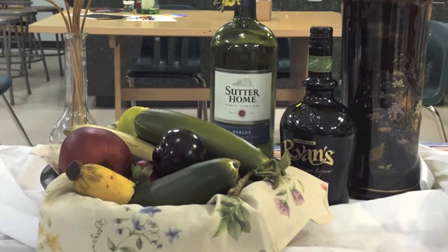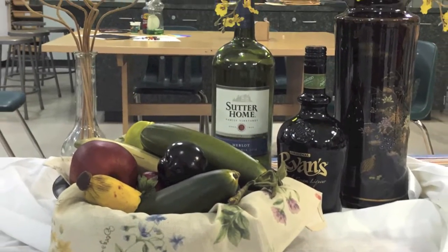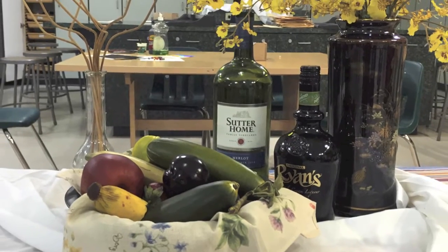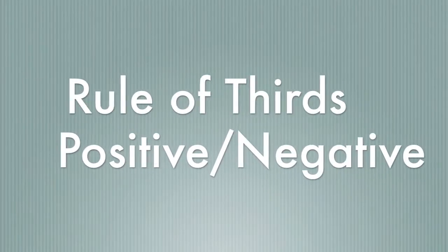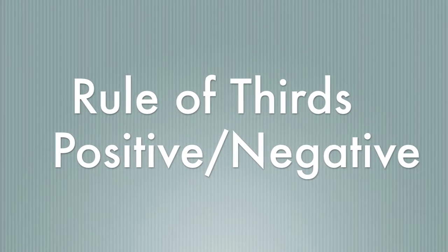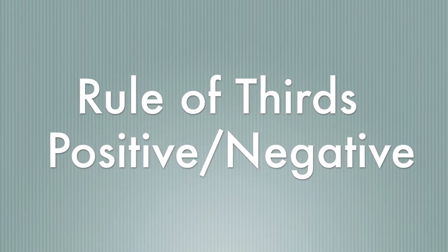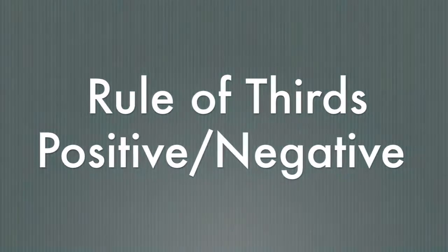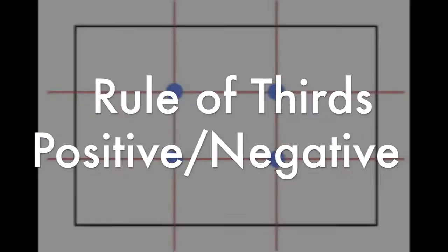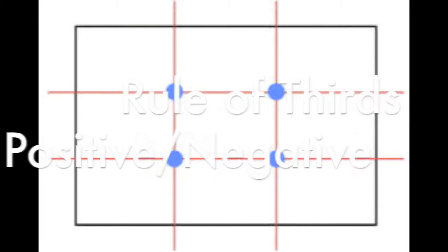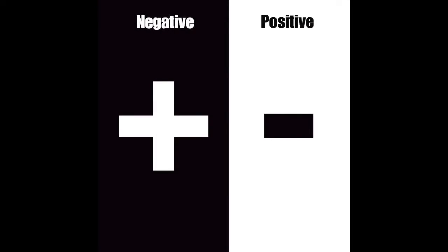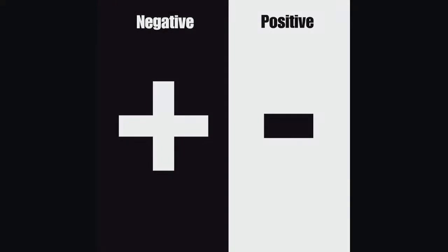In this tutorial I will only be addressing where to place the still life objects on your paper. I recommend that you go back and look again at the tutorial I created on the rule of thirds and also the tutorial on positive and negative space in art. Those two tutorials will help you.